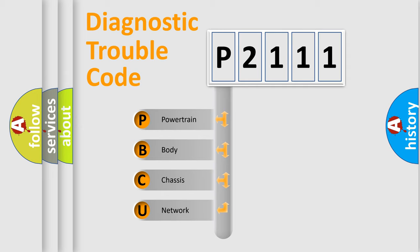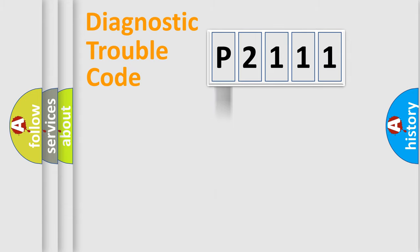We divide the electric system of automobile into four basic units: Powertrain, Body, Chassis, and Network. This distribution is defined in the first character code.